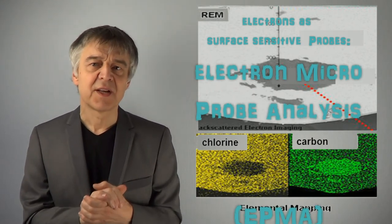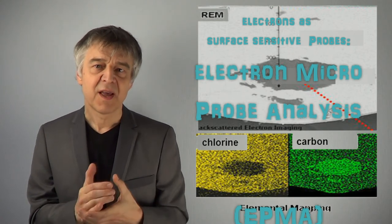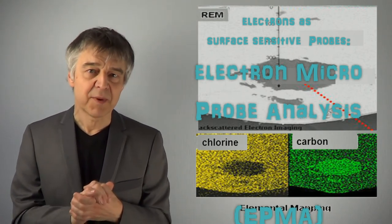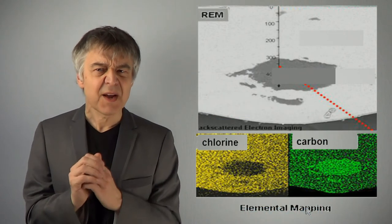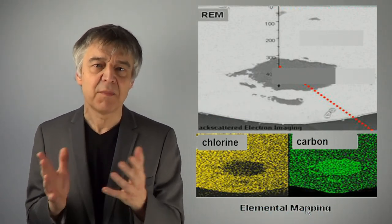The technique is called electron microprobe analysis, EMPA or EPMA. The emitted characteristic X-rays of the surface elements are measured.